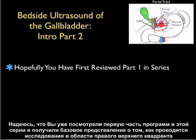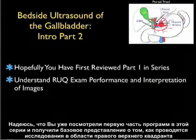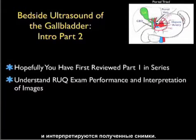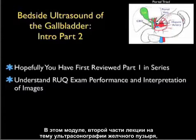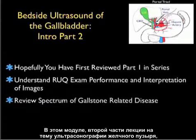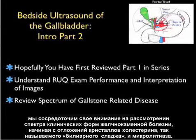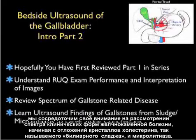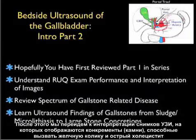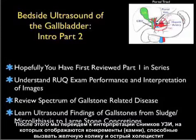Hopefully you've reviewed Part 1 in the series and have a basic understanding of how to perform the right upper quadrant exam and also how to interpret the images that you will obtain. In this module, Part 2 of Gallbladder Sonography, we're going to focus specifically on the spectrum of gallstone related disease, beginning with a deposition of cholesterol crystals known as gallbladder sludge and microlithiasis, on to the ultrasound findings with large stone concretions that may cause biliary colic and acute cholecystitis.